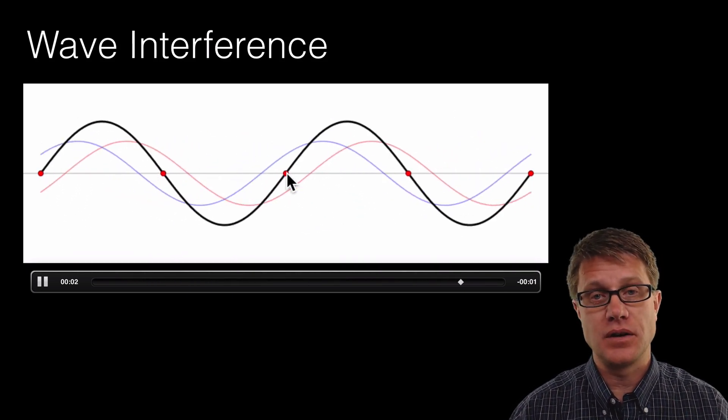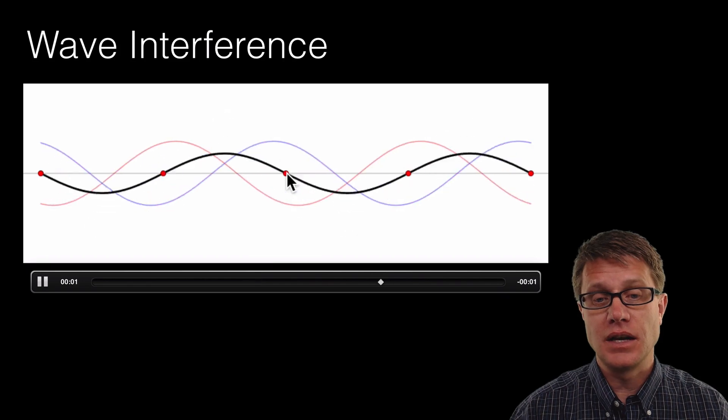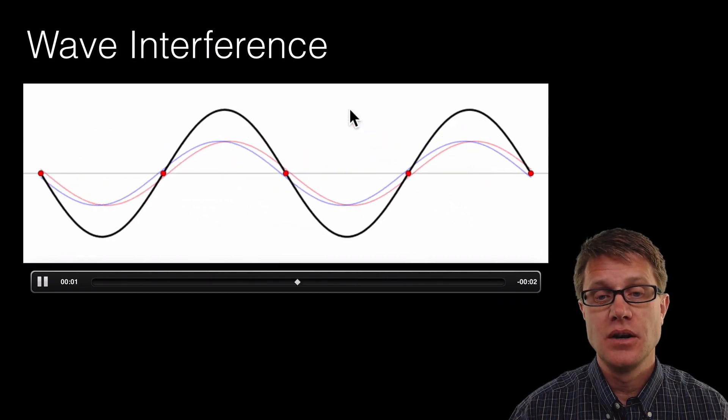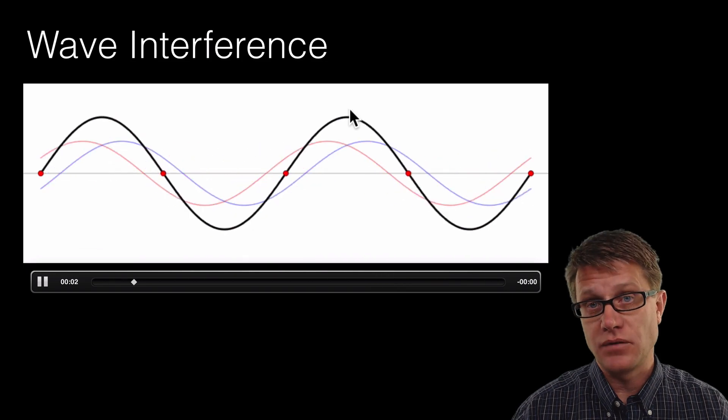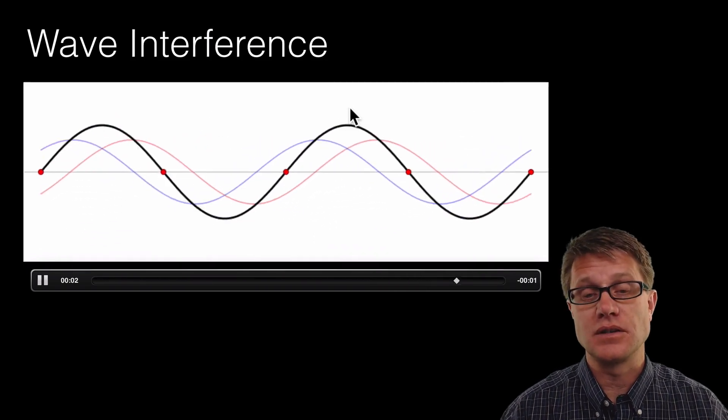we will talk about this in a future video called nodes, it is total destructive interference where it is not moving at all. And then if we look at these troughs right here, or these antinodes rather, those are going to be areas where we have total constructive interference. It is coming together.